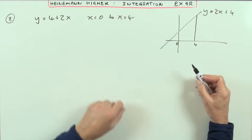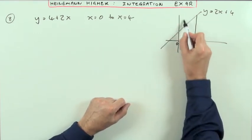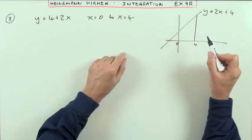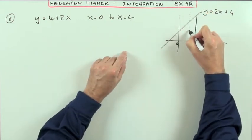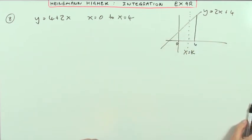So this is the area in question, and the question says, where would you put a line x equals k so it cuts that in half? Well, it's obviously not going to be in the middle because that half's smaller than that half, so there's some line x equals k that splits that area into two equal parts.